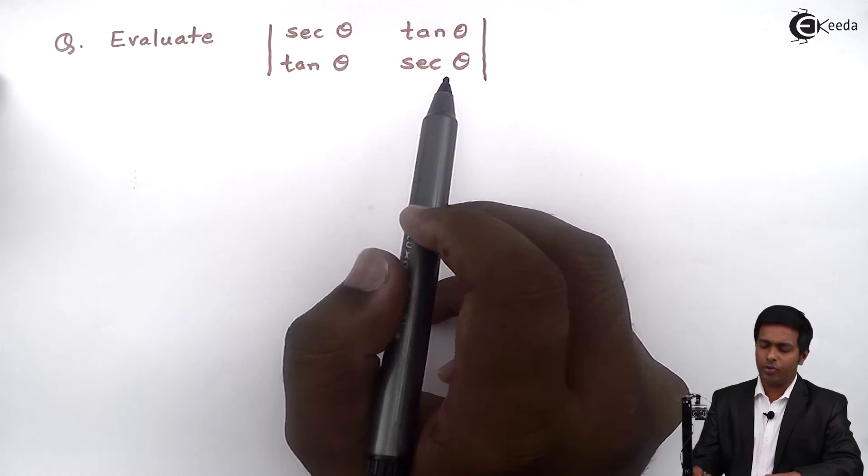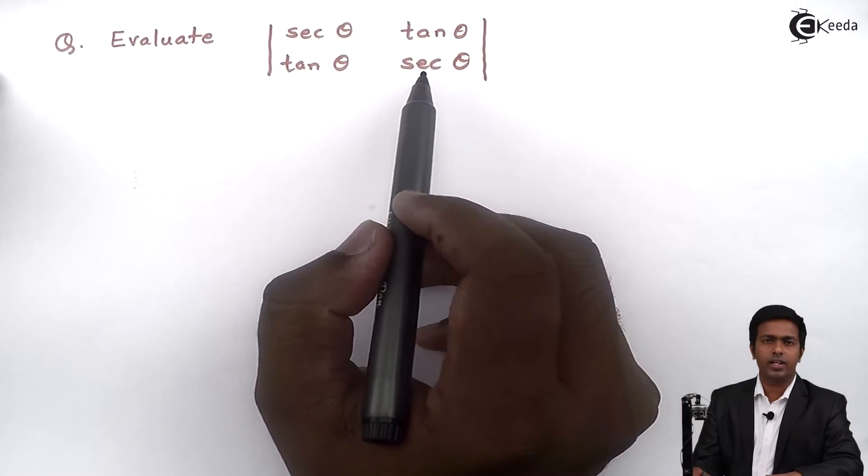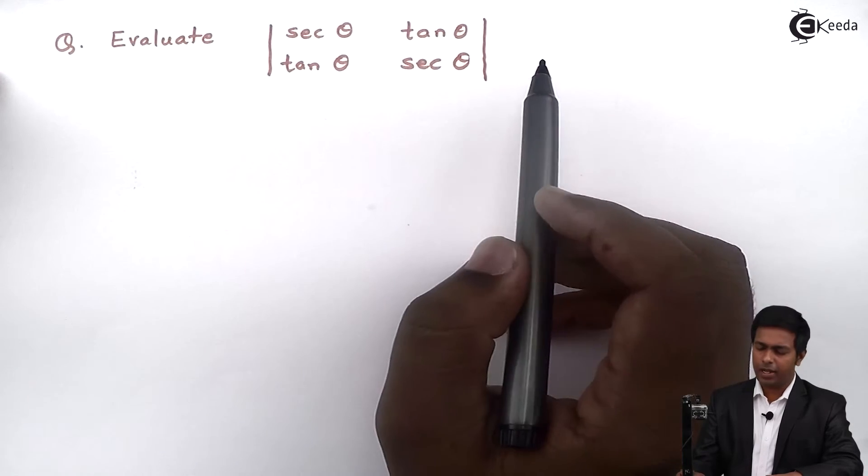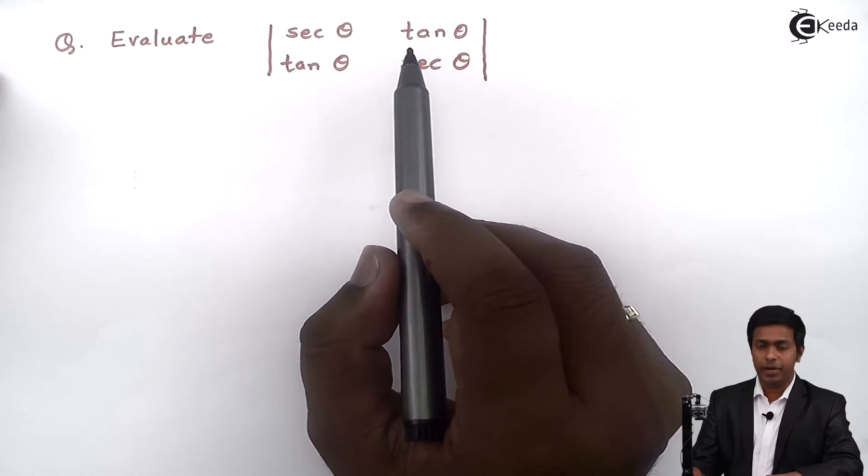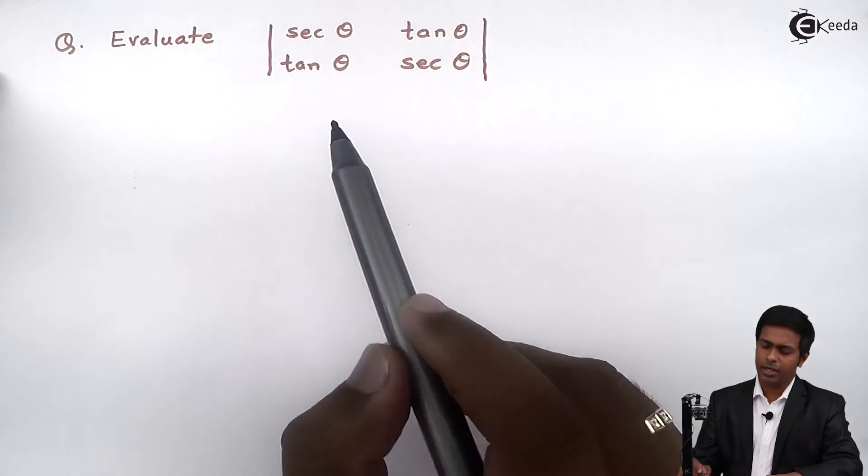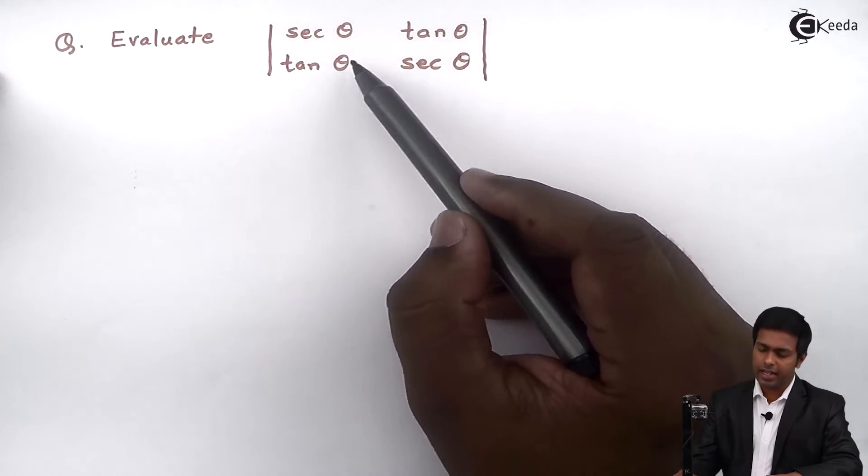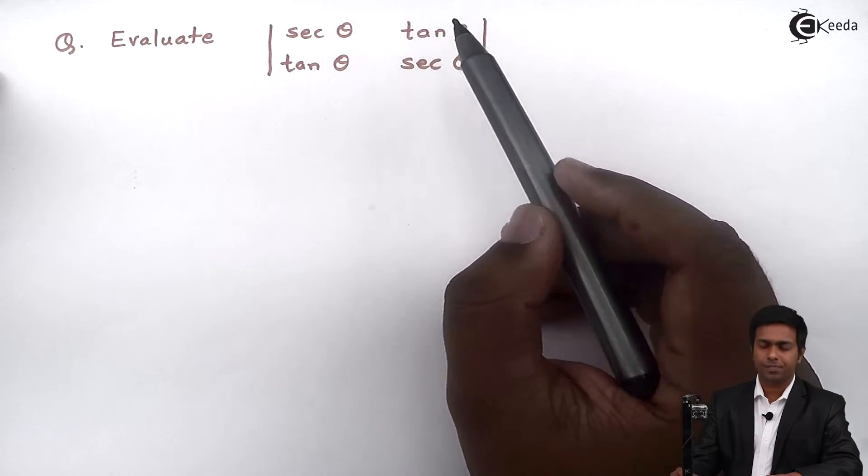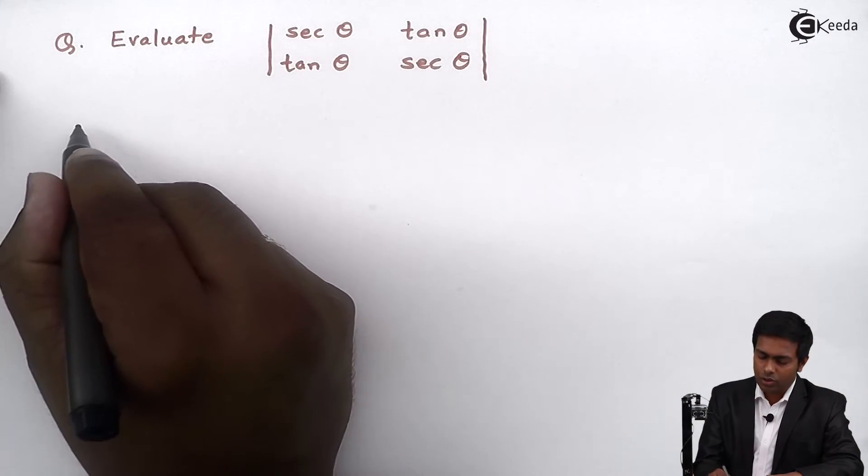Now to evaluate the 2 by 2 order determinant we multiply the elements on the principal diagonal and then we subtract the multiplication of the elements of the secondary diagonal. So let us proceed for that. So therefore,